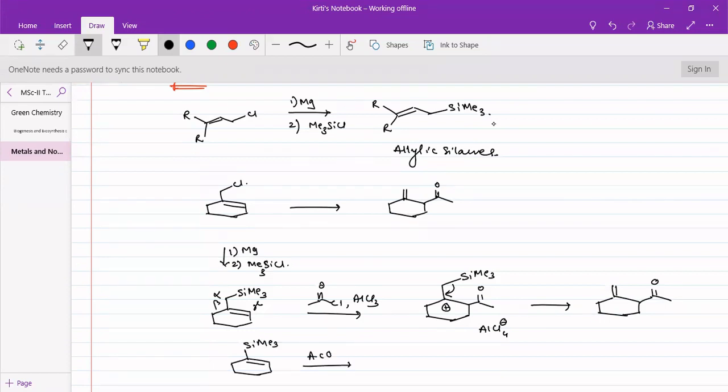If we add acetic acid, it will be adding proton over here and not anything else but just a proton will be added. Now we will have a carbon-carbon double bond. So here we have two hydrogens. We will have a Si-Me3 over here and a carbocation.